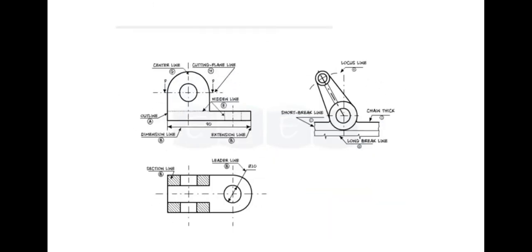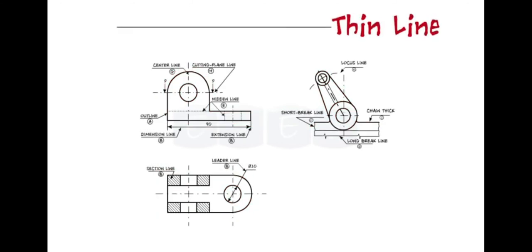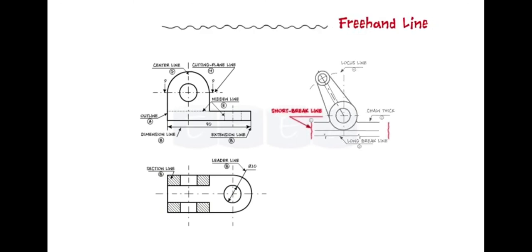Now let us see the different types of lines. First is a continuous thick line; this line is used to display outline and edges of the main drawing. Next is the continuous thin line; this line is basically used for dimensions, extensions, projections, leaders, hatching, etc. Next is a continuous thin freehand line.